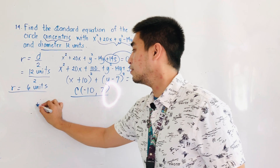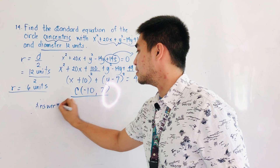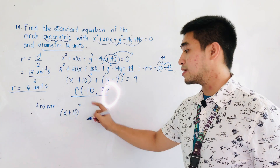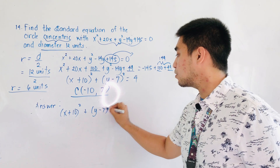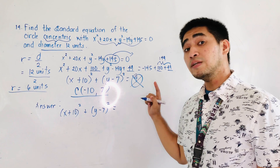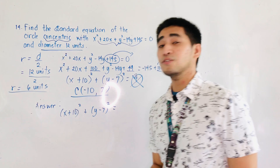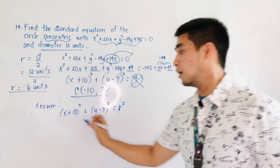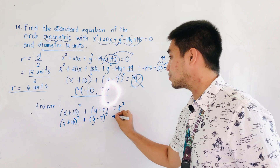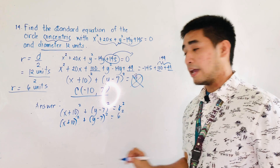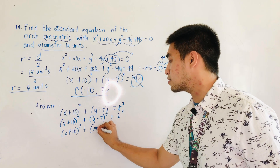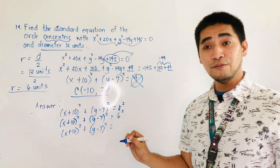So let us now write the answer. Our answer should be x plus 10 quantity squared plus y minus 7 quantity squared is equal to — not 4, because we do not share the same radius. Therefore, we use our radius r squared, which is 6 squared. Our final answer is x plus 10 quantity squared plus y minus 7 quantity squared is equal to 36.